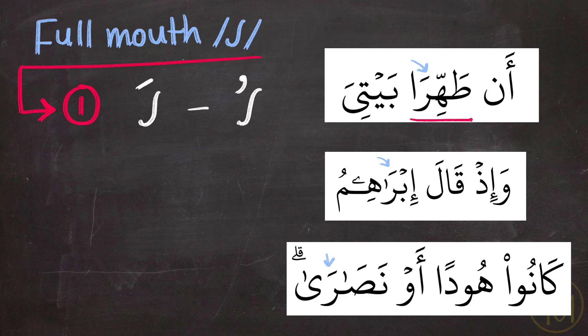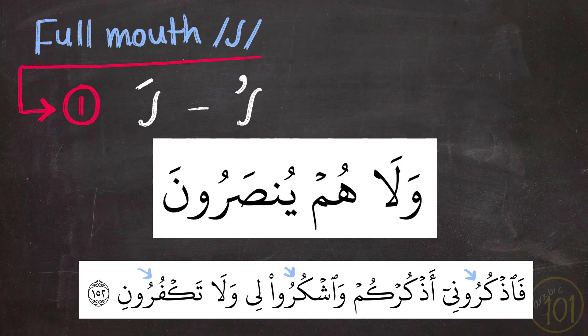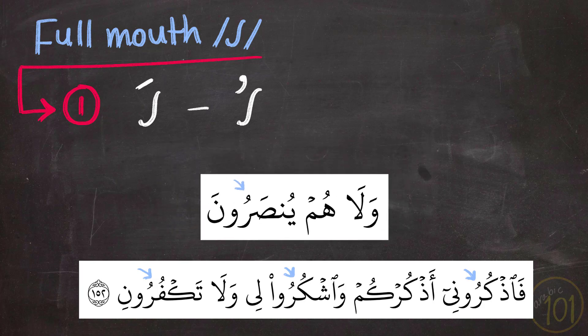So we said Tahira, Ra; we said Ibra-Heem — we didn't say Ibra-Heem, because it has Fathah on top of it. The same applies for Nasara. Let's have a look at another set of examples when the Ra has Dhamma on top of it. Here we have several examples of Ra that has to be pronounced full mouth because it has Dhamma on top of it. So we say Fathahurouni, and we say wa-shkuru and wa-la-ta-kfu-roon — of course we can't say wa-la-ta-kfu-roon.